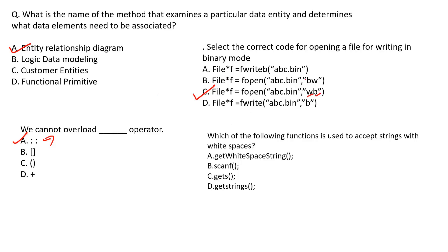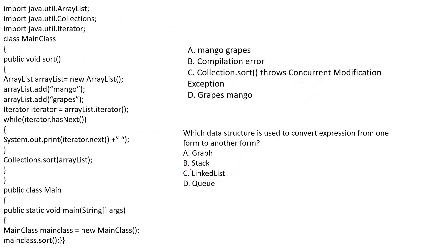Which function is used to accept a string with white spaces? If you use scanf with a string that has white spaces, only the first part before the space is captured and the rest is eliminated. When you want to consider the whole string including spaces, you use the gets() function.